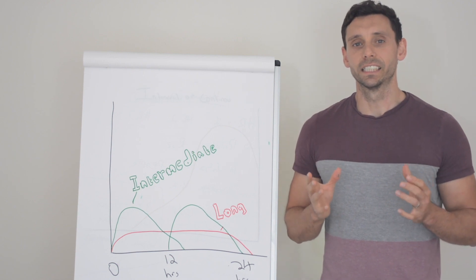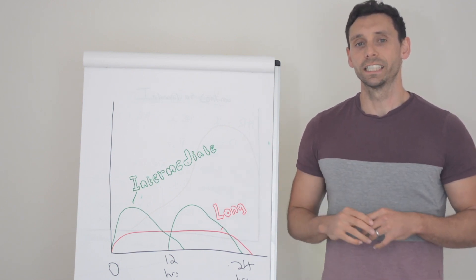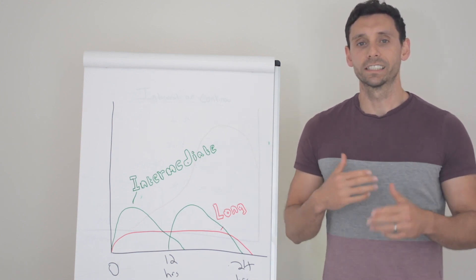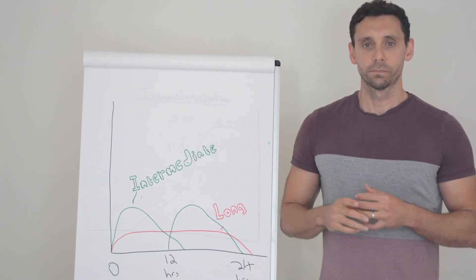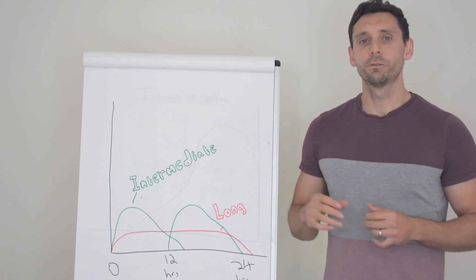Historically, intermediate acting insulins were used as your basal or background insulin before long acting insulins were invented. But after technology has moved on and long acting insulins have come to market and have been a viable option for patients to use, intermediate acting insulins have found their own place among the treatment of type 2 diabetes.